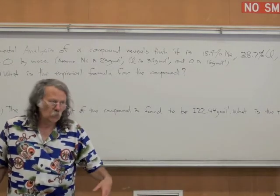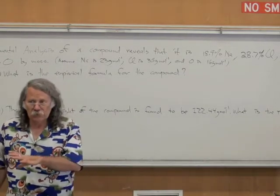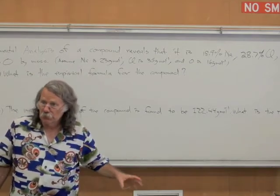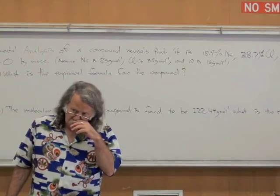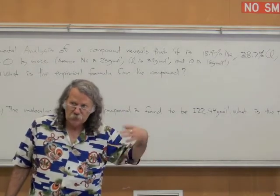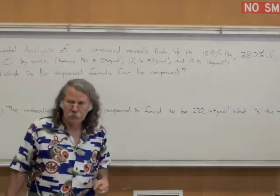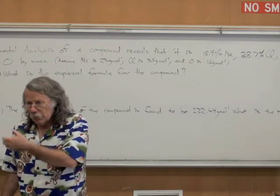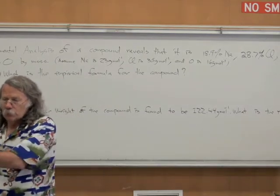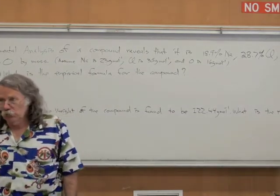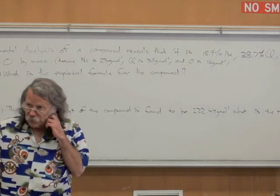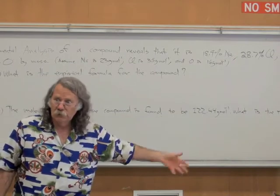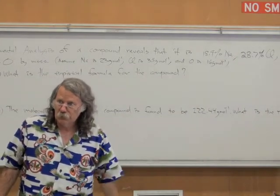The molecular formula corresponds to the actual formula. The simplest whole number ratio is the empirical formula, and that one is what we find experimentally with data like this. And then the molecular formula is what the actual molecule was, and it's always going to be some integer multiple of empirical formula units.